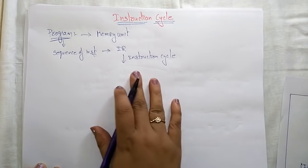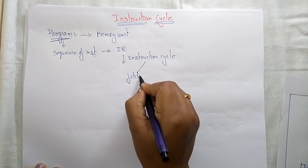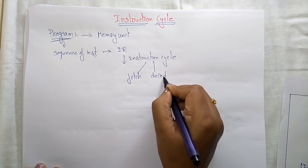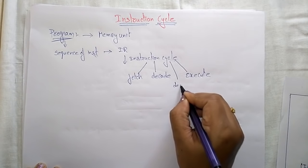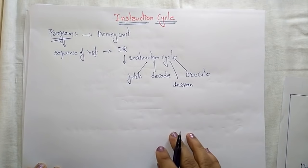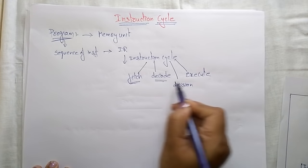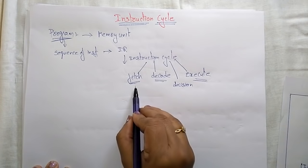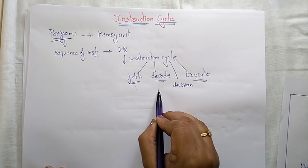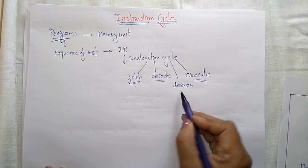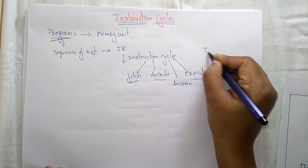Each instruction is executed in the form of instruction cycle phases. In a basic computer, each instruction cycle consists of fetch, decode, and execute. In between, if there is an indirect address, a decision is taken at the effective address stage. Fetch is used to fetch the data from memory. After fetching, the data is decoded in the decode phase. After decoding, it reads the effective address from memory if it is an indirect address.